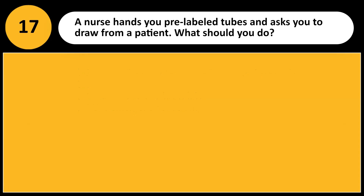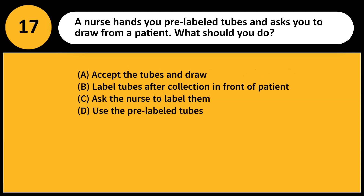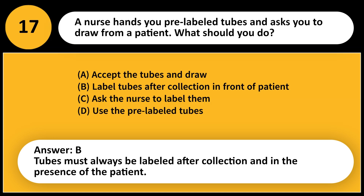A nurse hands you pre-labeled tubes and asks you to draw from a patient. What should you do? A. Accept the tubes and draw. B. Label tubes after collection in front of patient. C. Ask the nurse to label them. D. Use the pre-labeled tubes. Answer: B. Tubes must always be labeled after collection and in the presence of the patient.